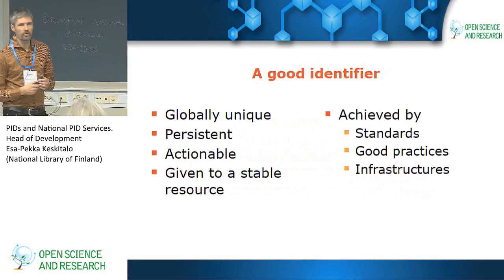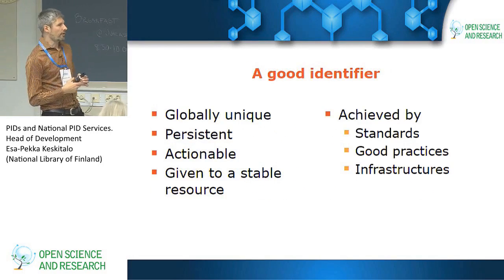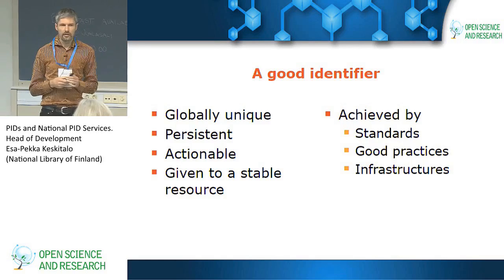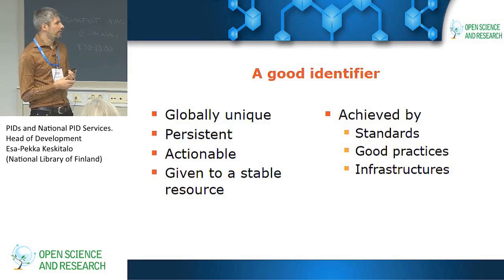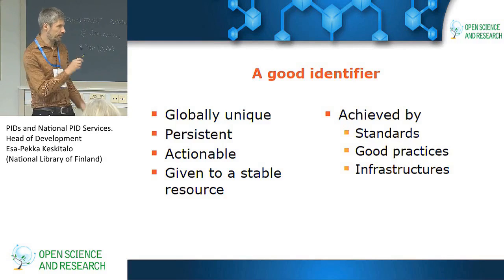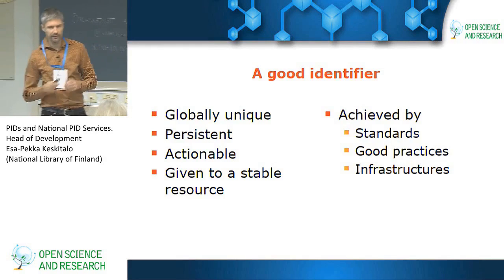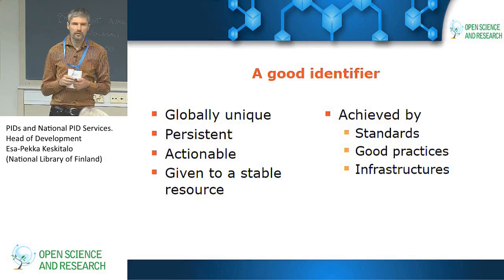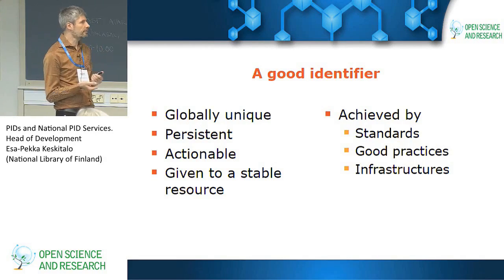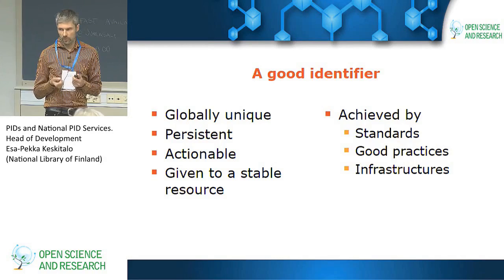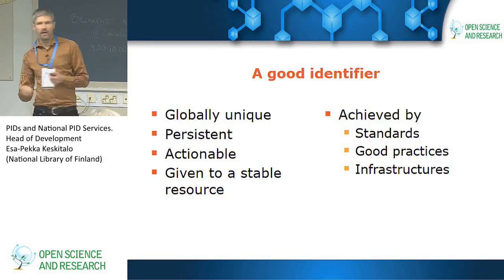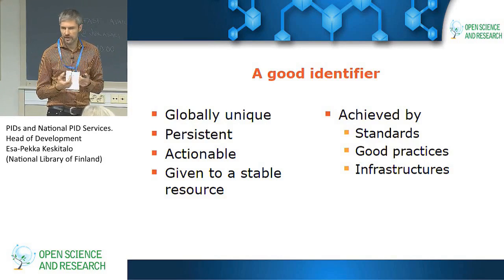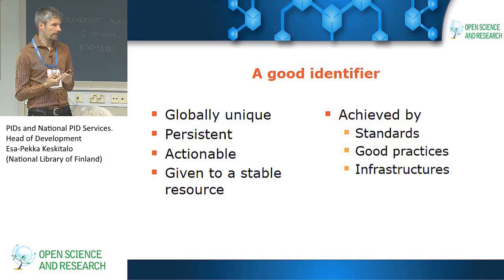A good identifier — and all the offerings on the market today, I think, fulfill these requirements — they are globally unique, they are persistent, and they are actionable. It's important that the information resource they identify also stays stable and persistent. To be globally unique, we need standards, but standards always go only so far, so we need good practices applied to the rules of the standards, and we need the infrastructures to provide the related services.